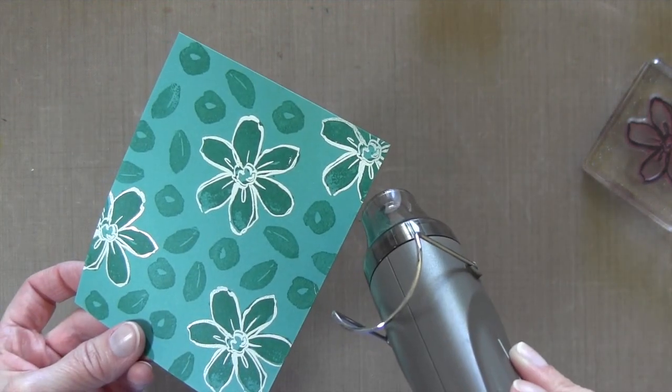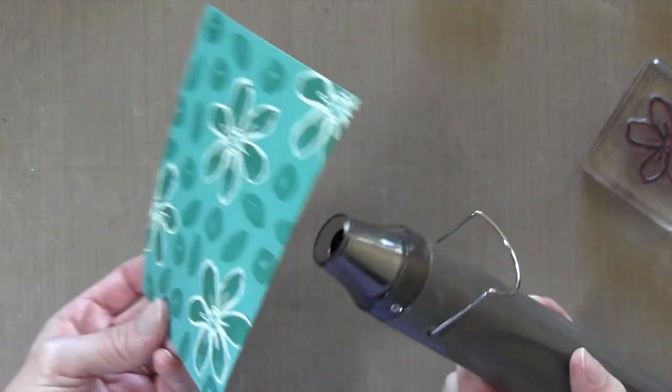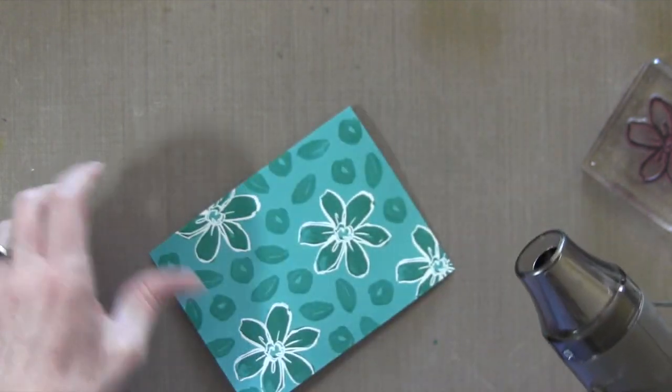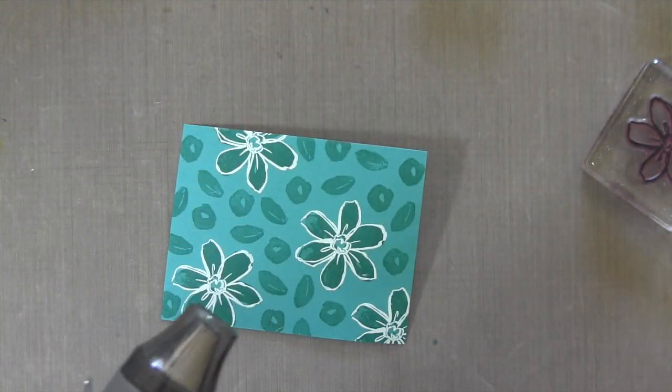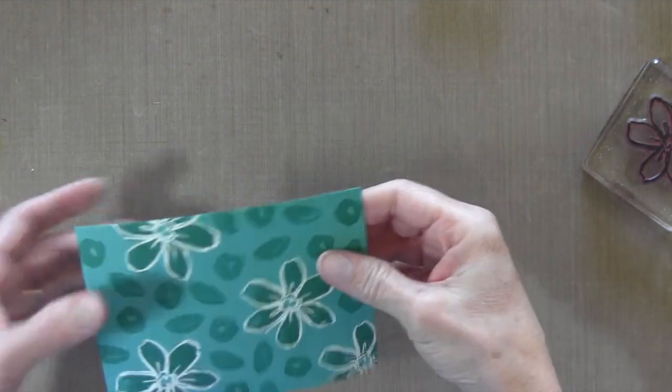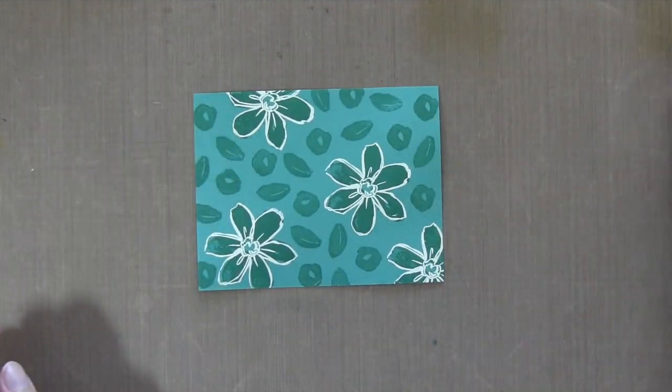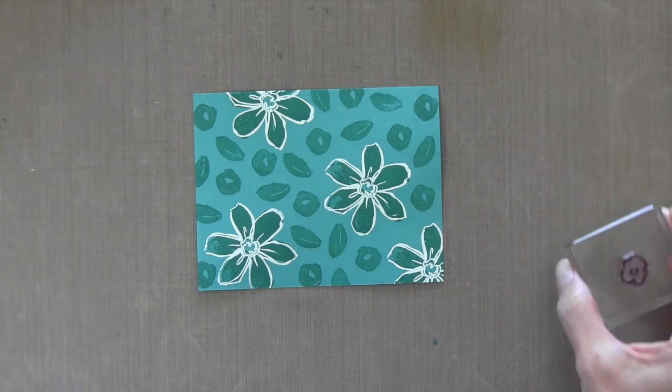And then I went back and did the smaller flowers, and then the leaves. And I found that the colored cardstock did warp a little bit. Not as bad, actually, as the normal Neenah Solar White that I usually heat emboss. But the interesting thing is that I was able to kind of bend it back into place really easily. So that was really nice.